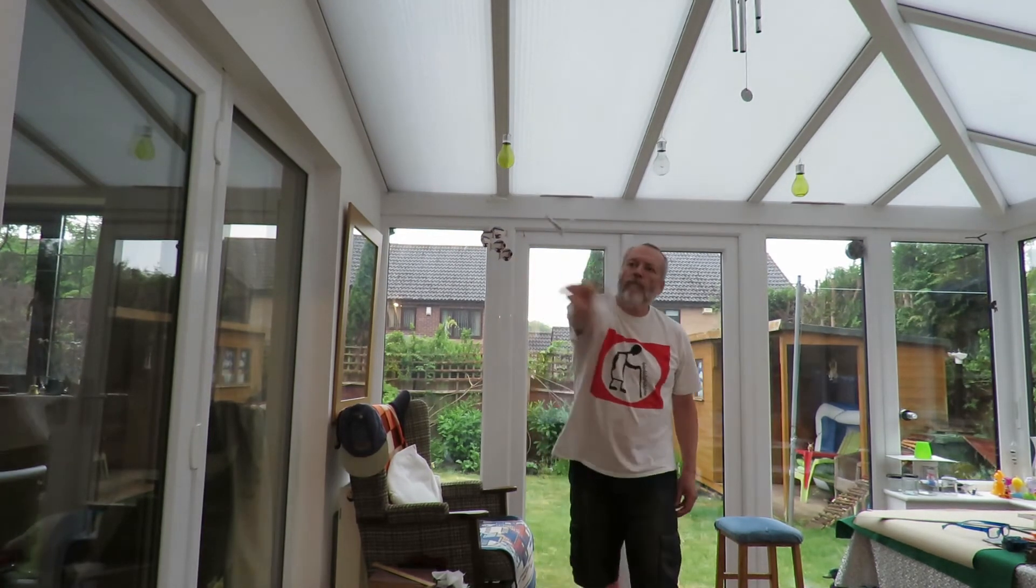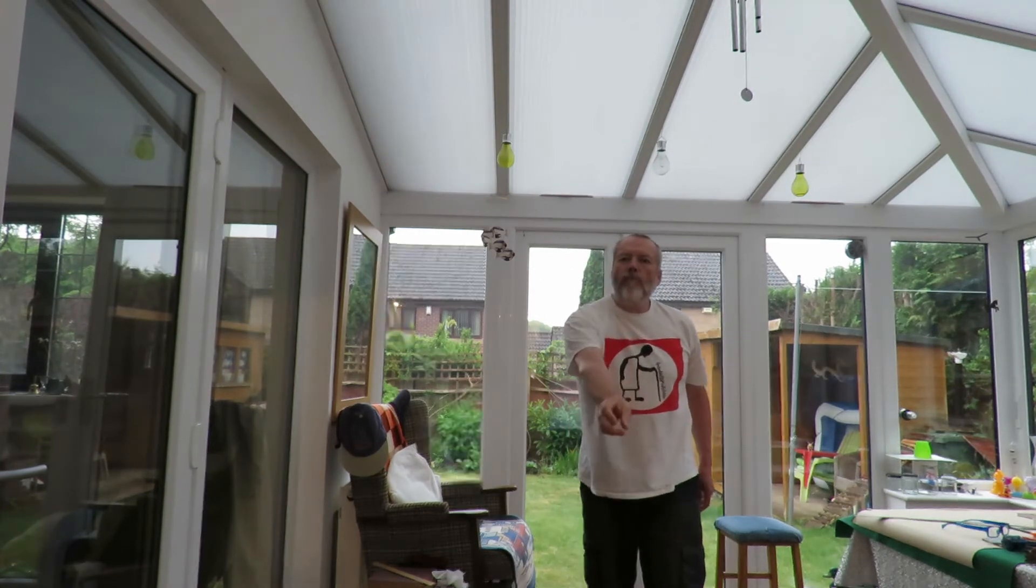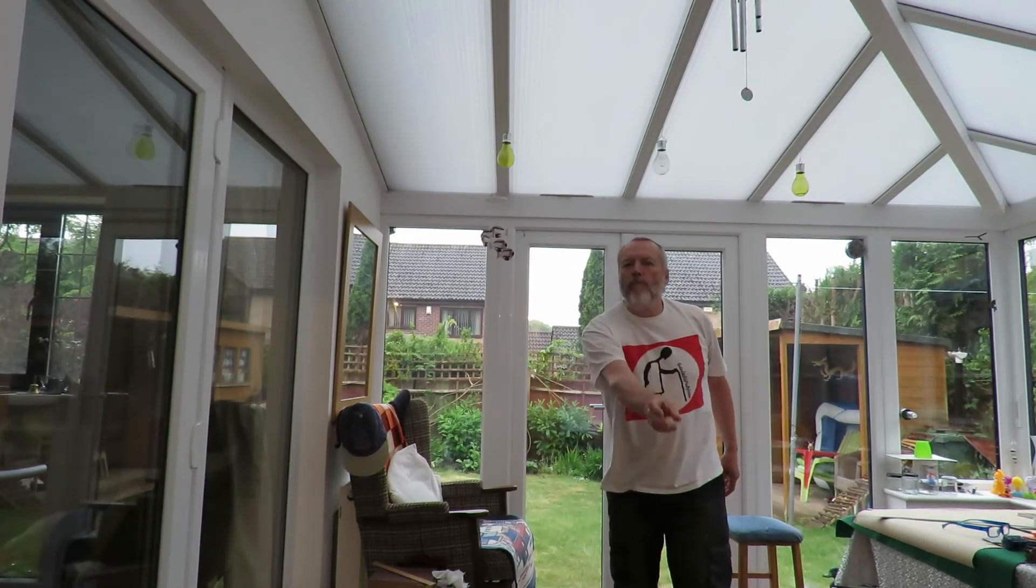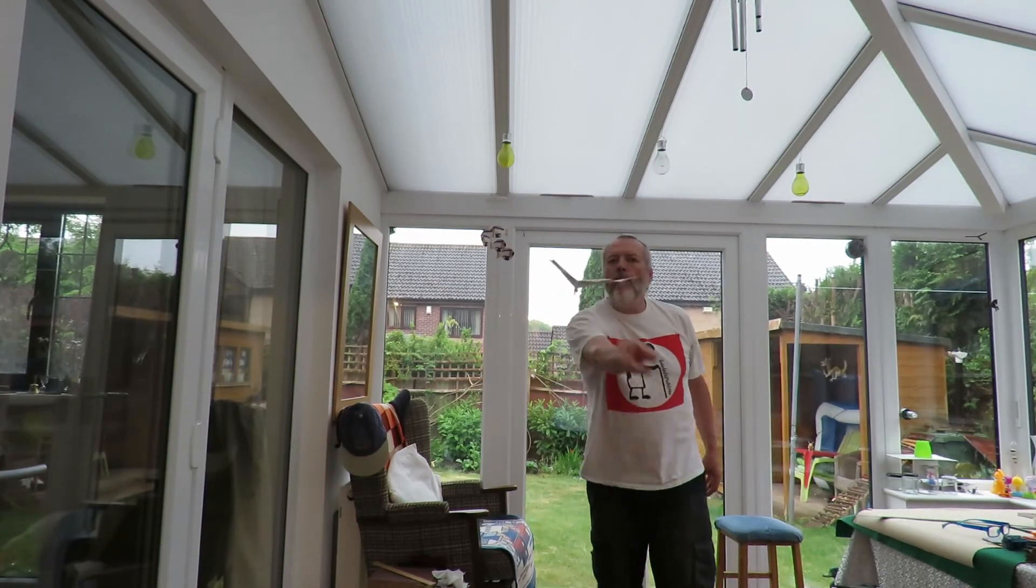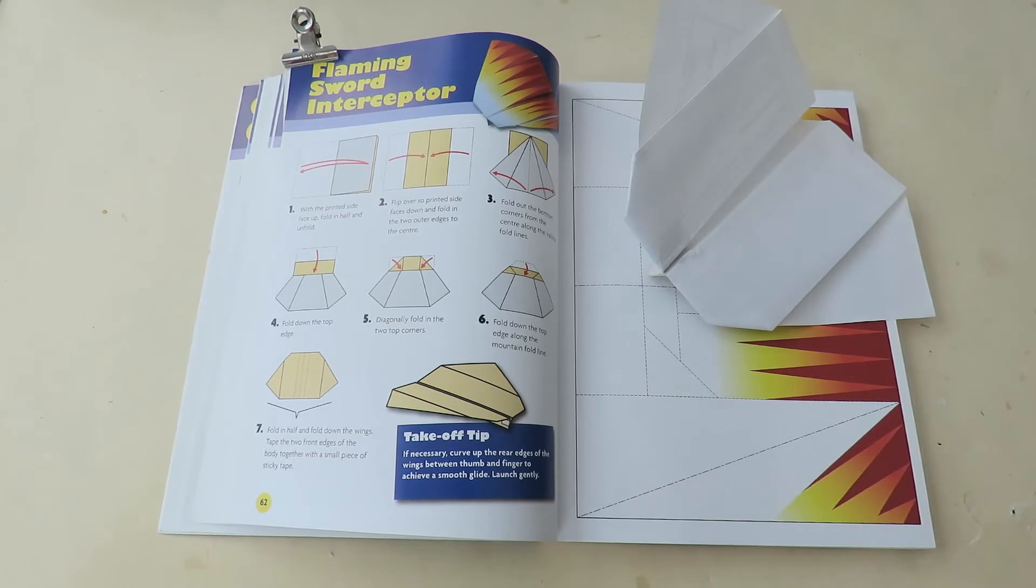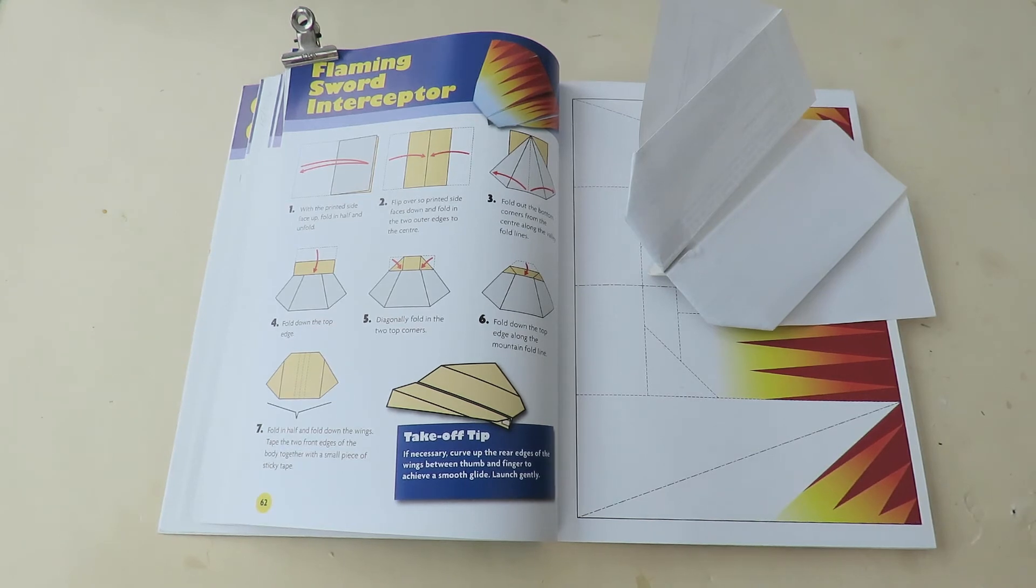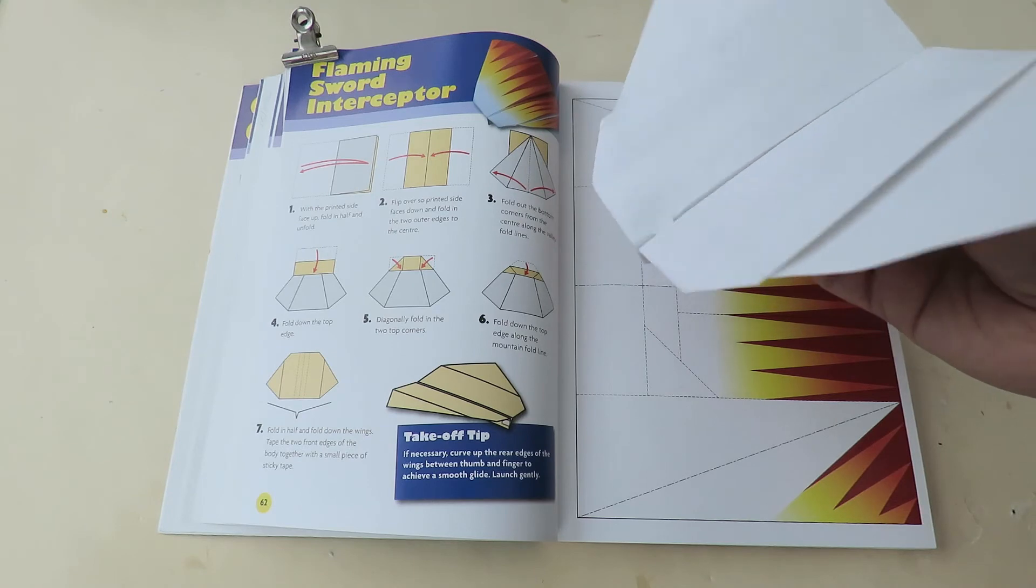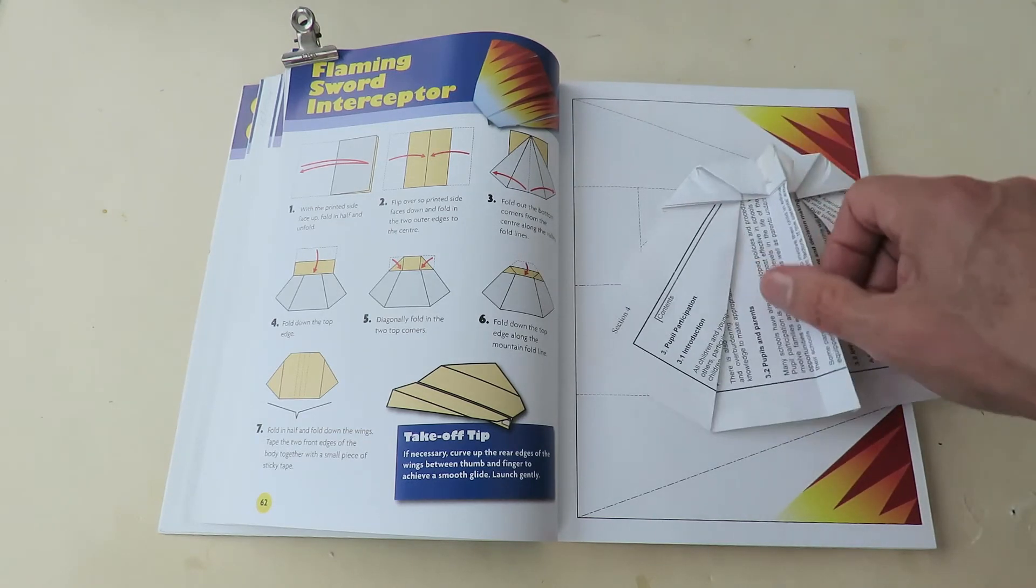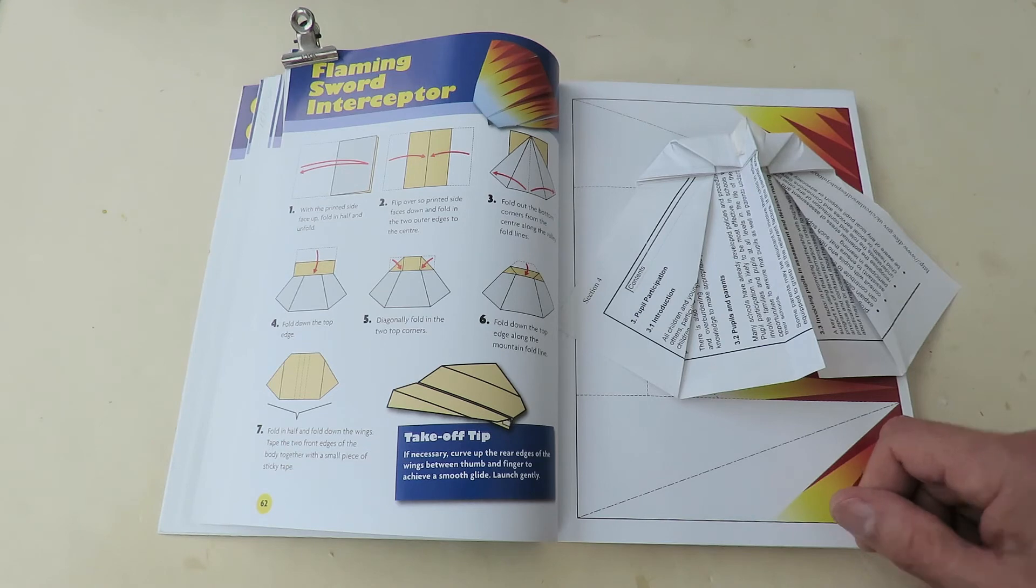Right. Ha ha, ha time. Flaming Sword Interceptor. Yeah I'm afraid it's another one I don't like. It does fly but yeah I just don't like it. And I'm sure that somehow or other in the sequence I got the sequence of folds wrong. I'm sure I didn't but...